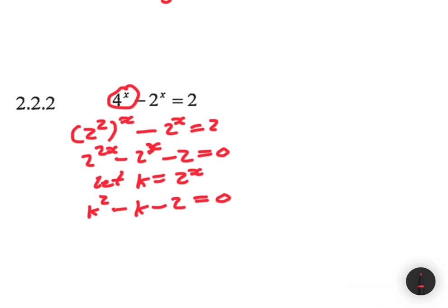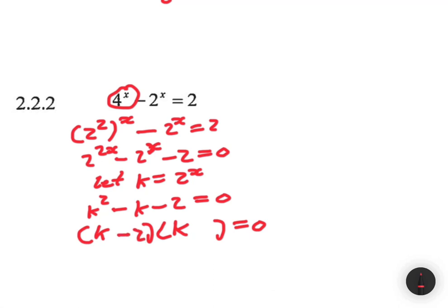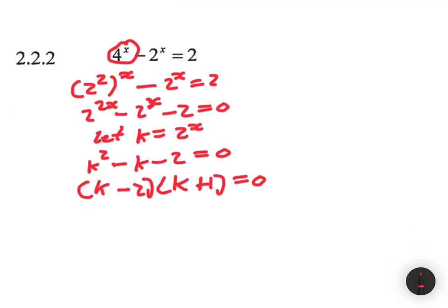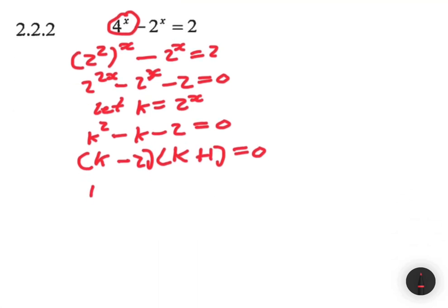Now we just factorize to find k. We have two brackets each starting with k, equals 0. We need two numbers that multiply to give minus 2 but add to give minus 1, the coefficient of k. That is minus 2 and plus 1. So solving for k gives k equals 2 or k equals minus 1.